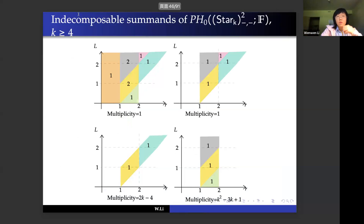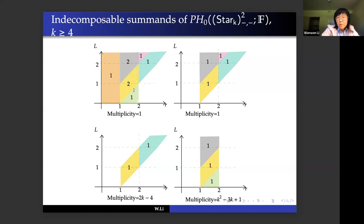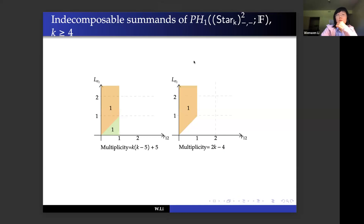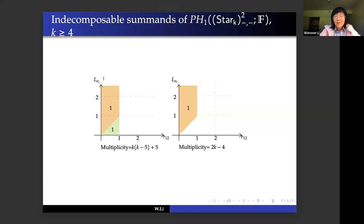We figure out the indecomposable direct summand decomposition for PH_0 of the second configuration space of the star graph with two parameters. We again have a summand with F^2 for two chambers, so PH_0 is again not interval decomposable. For the other direct summands, they are actually interval modules. We also find the indecomposable direct summand decomposition for PH_1 of this configuration space, which is very nice — just three overlapping intervals.